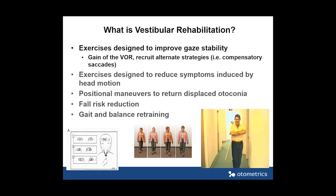The gain of the vestibulo-ocular reflex is a simple metric: eye velocity divided by head velocity. The vestibular system detects both head rotation and acceleration or linear motion of the head. If I turn my head 100 degrees per second to the right, my eyes should move 100 degrees per second to the left, giving a gain of 100 divided by 100 = 1. Ideally that is the value, but in reality it fluctuates plus or minus roughly 15 to 20 percent. So it's normal to have a VOR gain of 0.85 or 0.9, and we are beginning to understand age-matched data on healthy controls.